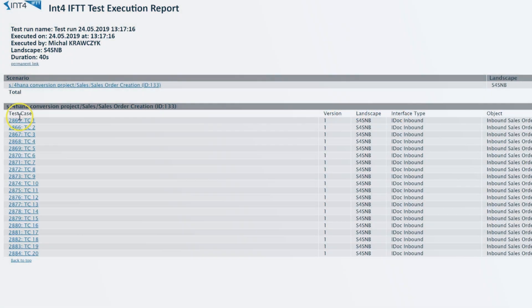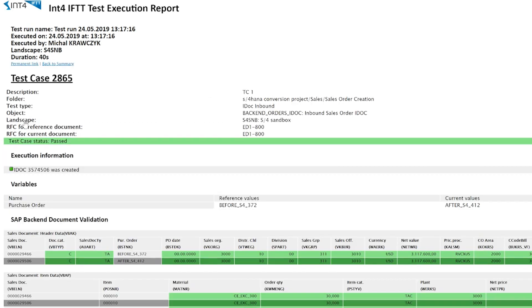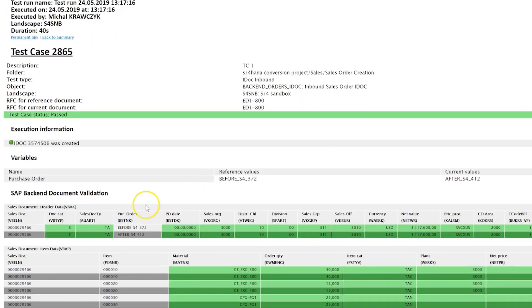We can also verify the results on the field level, selecting one of the test cases. As you can see in the details, all of the fields of the new sales orders, dark green, in the SAP database are exactly the same as the reference sales orders, light green, in the SAP database.